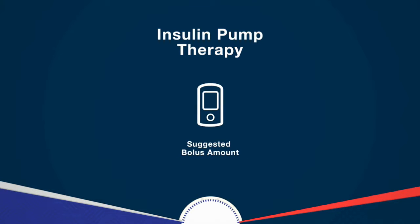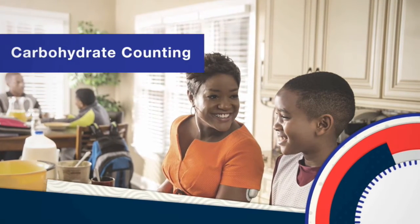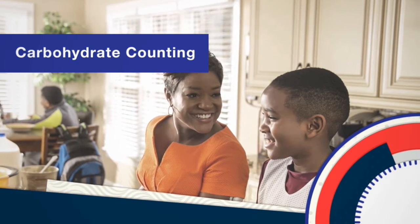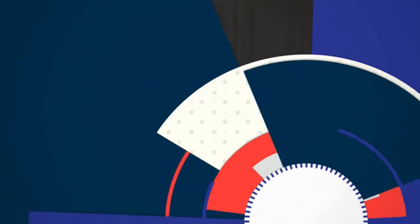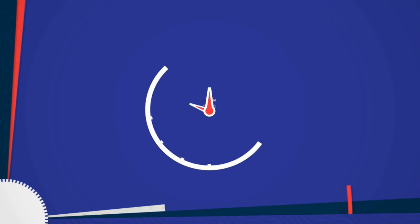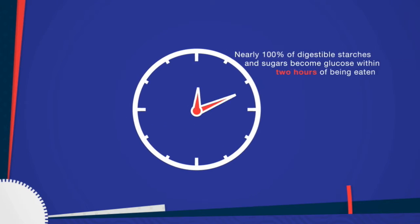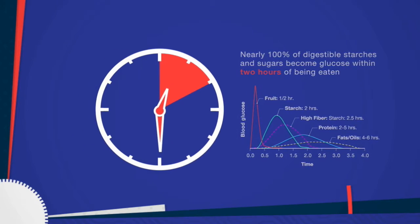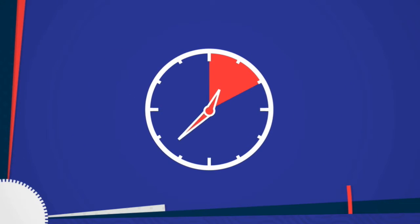We will go into more detail on how the Omnipod calculates a bolus dose later in this training. Let's take a look at how what you eat impacts your care. Carbohydrate, or carb counting, is an important part of managing your diabetes. You probably eat many different kinds of food. Some foods may raise your blood glucose because they contain carbs. When your body digests food, it turns carbs into glucose very quickly. Nearly 100% of digestible starches and sugars become glucose within two hours of being eaten, so foods high in carbs have the greatest effect on blood glucose.